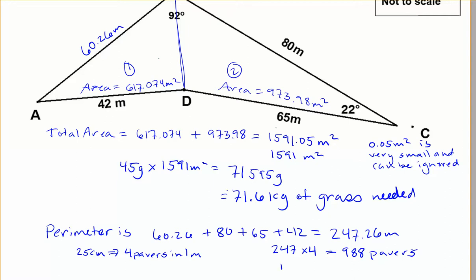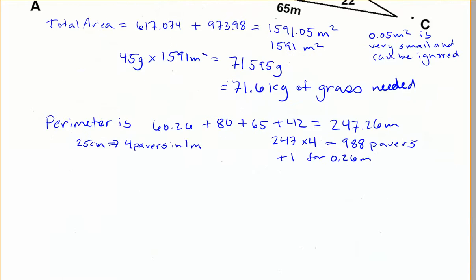And I'm also going to do the plus one for the 0.26 meters, because that's roughly 25 centimeters, that's about right. So it should kind of work in. So the total number of pavers that we would need then would be 988 plus 1. So 989 pavers needed.